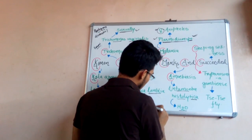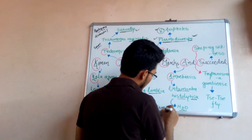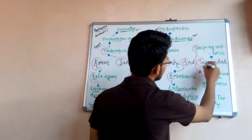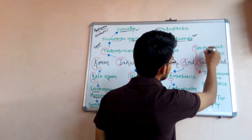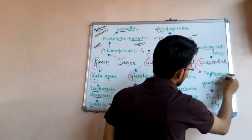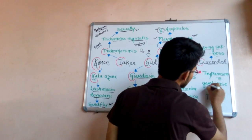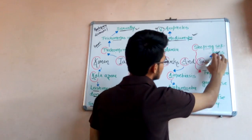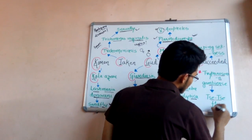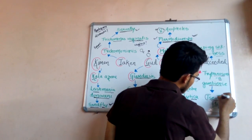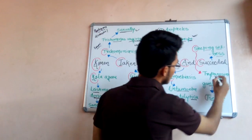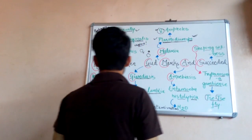And the last one is S, that is sleeping sickness, which is caused by Trypanosoma gambiense, which is transmitted by tsetse fly. Tsetse fly transmits the Trypanosoma gambiense into our body which causes sleeping sickness.